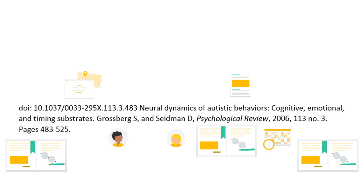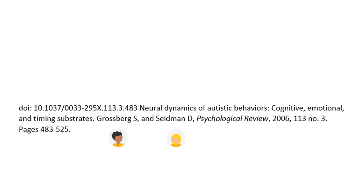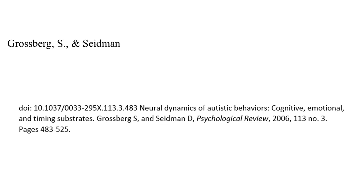Remember that each citation begins with the author names in reverse order with initials, so we'll start with Grossberg, comma, S, period, comma, ampersand, Seedman, comma, D, period. Next, the publication year in parentheses — so 2006 in parentheses — period.